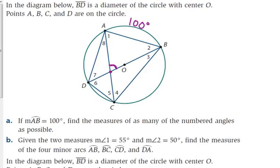We can't use central angles, but we can use what we just learned. Since AB is the arc, I'm going to identify the inscribed angle by extending those lines. The inscribed angle for arc AB is angle 7. So the measure of angle 7 is 50 degrees. I'll draw that in and write it down.